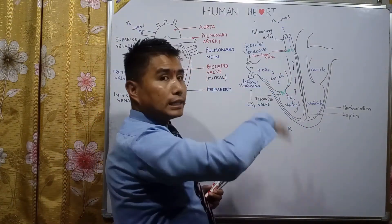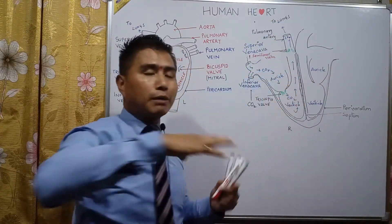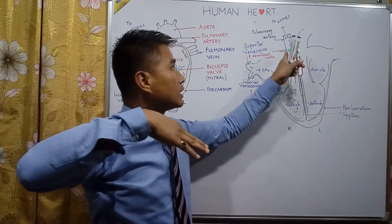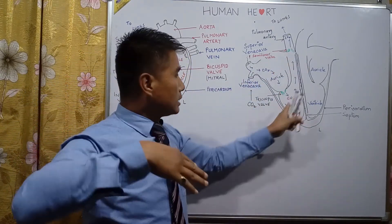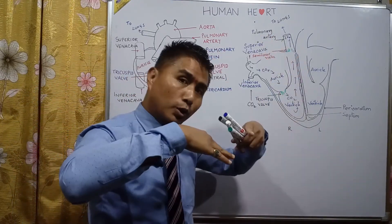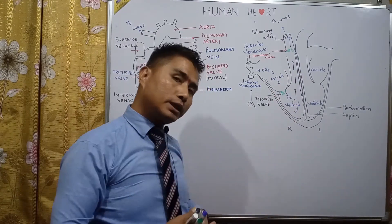The backflow of blood is prevented by the pulmonary semi-lunar valve because at that time this valve gets closed while the tricuspid valve opens due to the suction force of the ventricle.